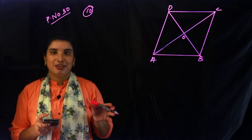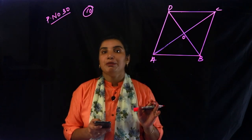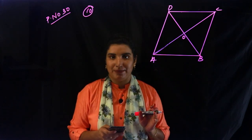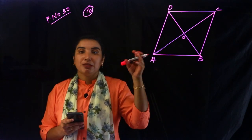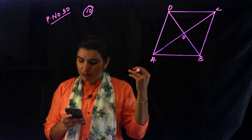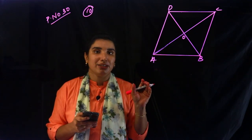Now we have a rough figure. ABCD is the parallelogram, and the opposite sides are equal.